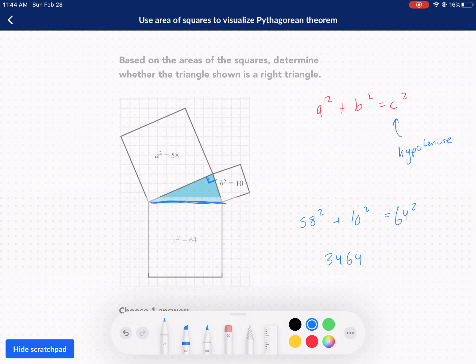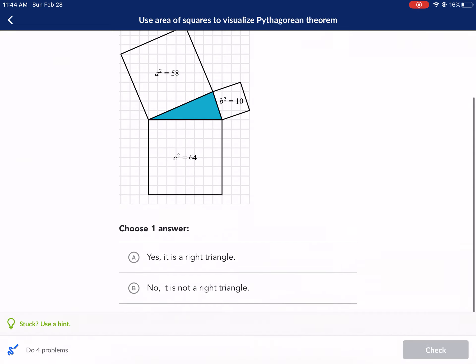Let me double check my answer. This is not equal to 4,096, which is 64 squared. So the answer is no. It's not a right triangle because we don't have a Pythagorean theorem relationship.